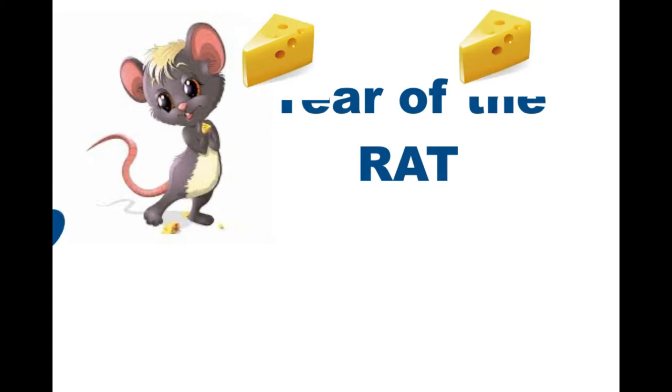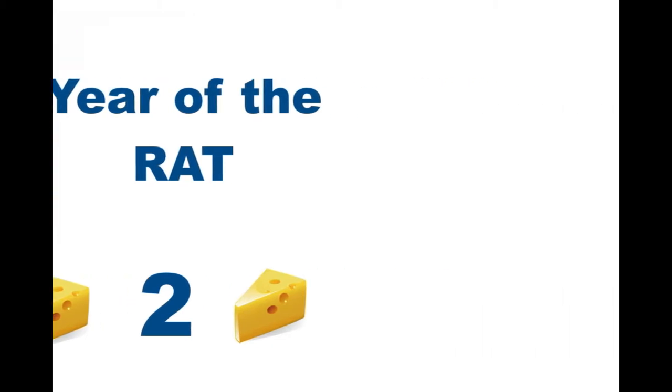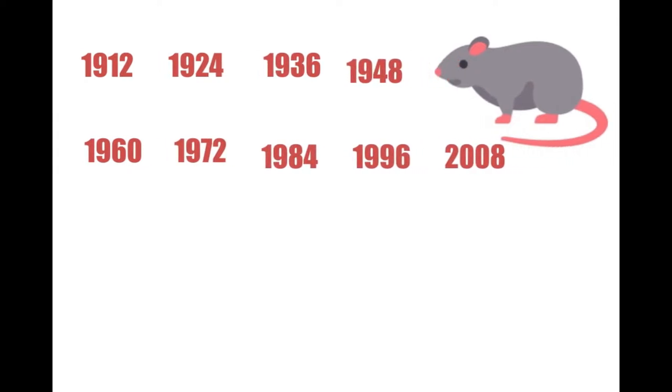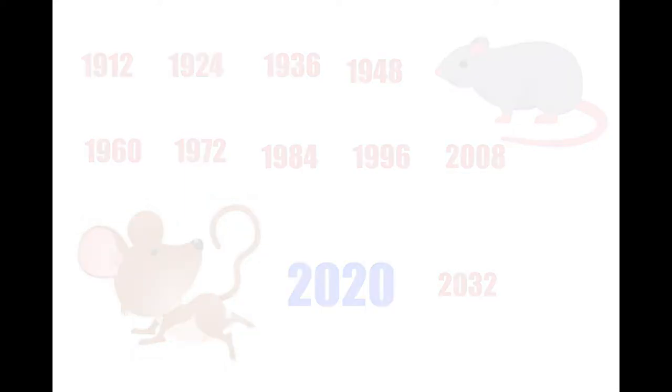For the year 2020, the main zodiac element is metal and the animal sign is rat, hence 2020 will be the year of the metal rat. The Chinese year will last from January 25th, 2020 to February 11th, 2021. Rat is the first in the 12-year cycle of Chinese Zodiac.